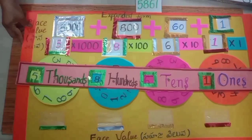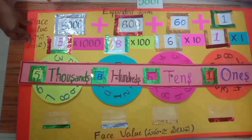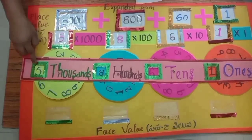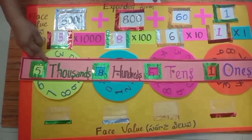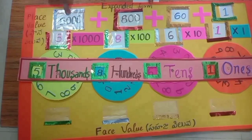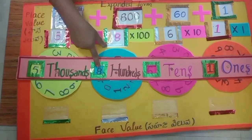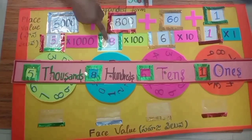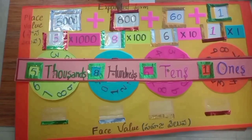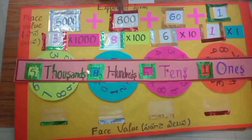Next, if we take place value: 5 is in the 1000s place, so 5's place value equals 5 into 1000, which is 5000. In the same way, 8 is in the 100s place — 8 into 100 equals 800, so 8's place value equals 800.